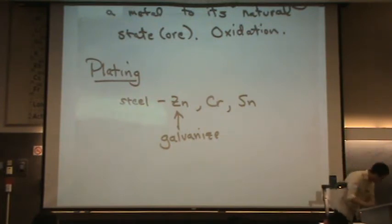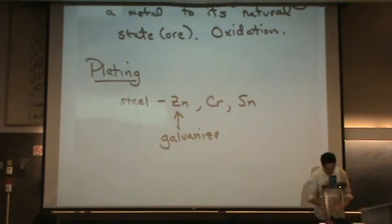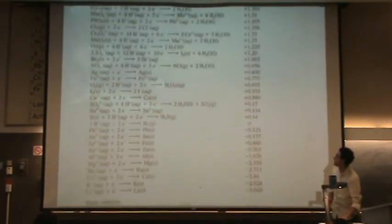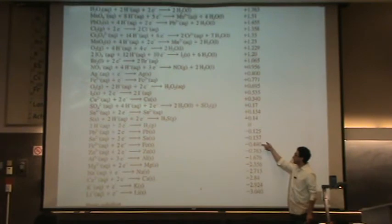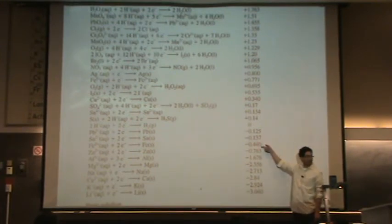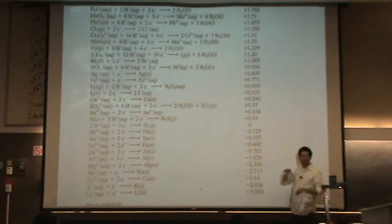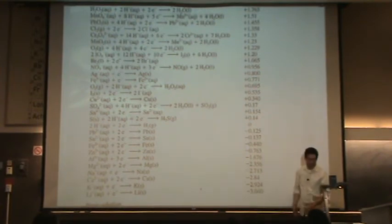Why does zinc oxidize first? Let's take a look at the standard reduction potential. Here's iron — oxidation would be 0.44, so that's spontaneous. Now look at zinc — it's 0.763. So zinc will oxidize before iron when you have both of them together. That's why it's useful as a protective plating material.